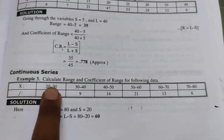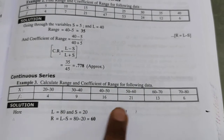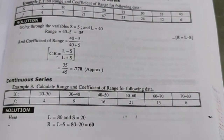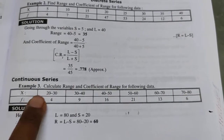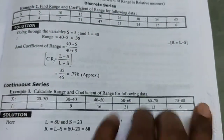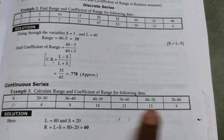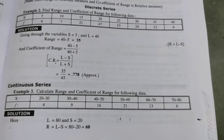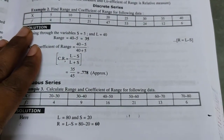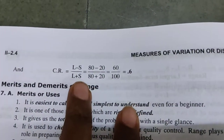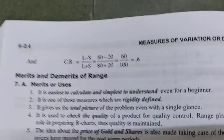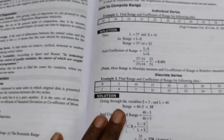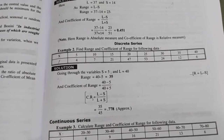For the continuous series, class intervals and frequency are given, but for range we observe only the class intervals. The largest value L = 80 and the smallest value S = 20. Range = 80 − 20 = 60. Coefficient of Range = (80 − 20) / (80 + 20) = 60 / 100 = 0.6. This covers range for all three series types under measures of dispersion.